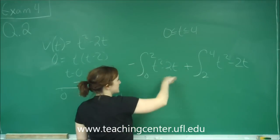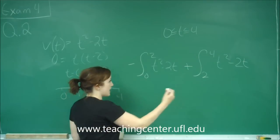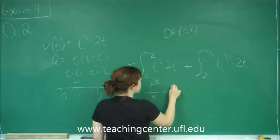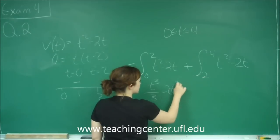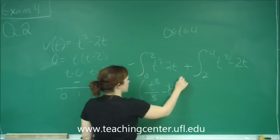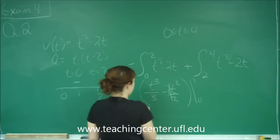We're going to take what we would normally get, this negative value, multiply by a negative to make it positive, and then add the other portion. So when I take the integral of this, I just get t cubed over 3 minus 2t squared over 2, so that will just be t squared. I'm going to evaluate this from 0 to 2 and I'm going to negate it.